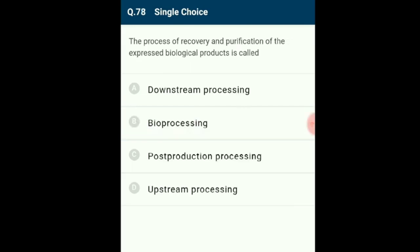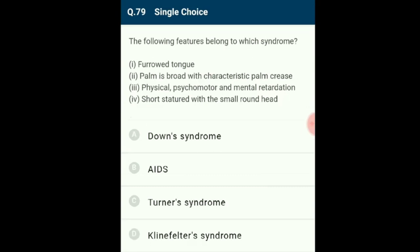Question 78: The process of recovery and purification of expressed biological products is called downstream processing. After completion of the biosynthetic stage, the product undergoes a series of processes including separation and purification, referred to as downstream processing. The answer is option A.